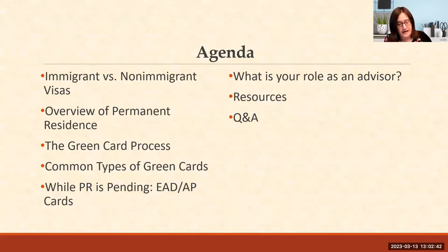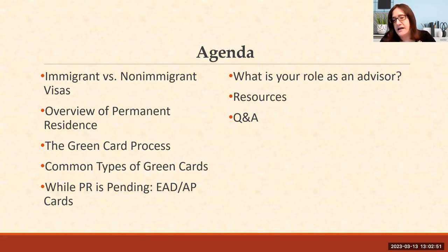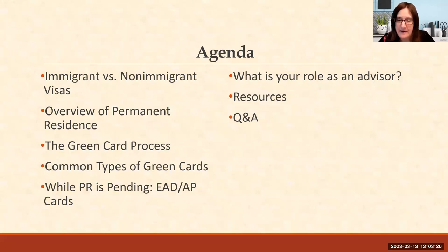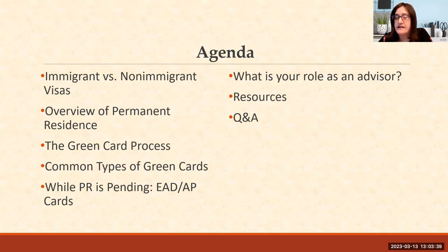To get started, let me run through our agenda. This is intended to be a beginner session to go over the basics of permanent residence and some of the main concepts and terminology. We're going to talk about immigrant versus non-immigrant visas, give an overview of what permanent residence is, some benefits and obligations, the steps in the green card process, common types of green cards, the option of applying for work and travel permission while the green card is pending, your role as an advisor, and resources.